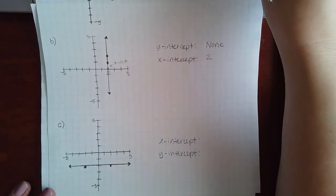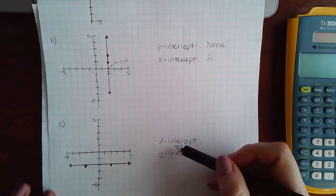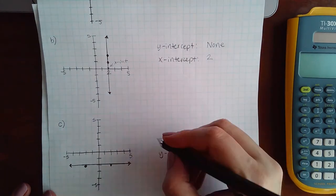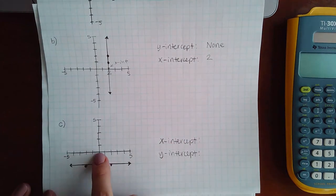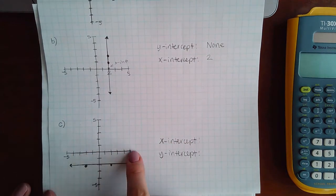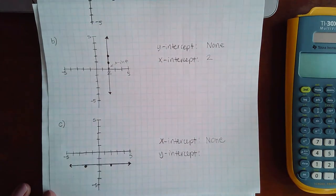And then the last example is this here. So notice that they switched. Be careful. Make sure you're paying attention to which one they're asking you for. So for the x-intercept, it does not ever intersect my x-axis. So for x-intercept, I would be selecting none.